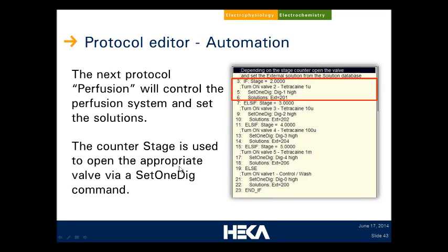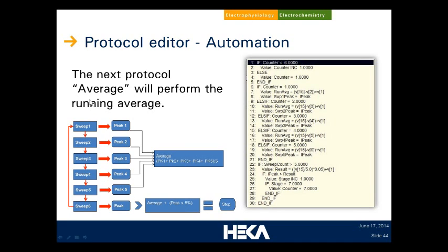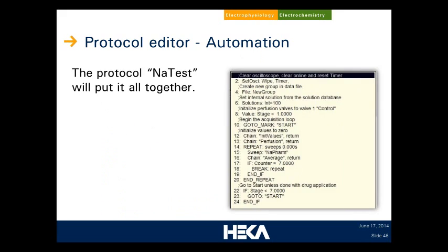Another tool is the chain protocol command, which allows us to modularize — to break down the execution of protocols into various components. The first protocol initializes all values to zero, used for counters and for doing the mathematics in my averaging. Then I wrote a protocol for perfusion control: I check a counter, and based on that I specify the digital control and change the solution database to match the current concentration. The counter state is used to set the digital valve on and off. All of these protocols and the data set are available for download, so you could try them and modify them as you like.